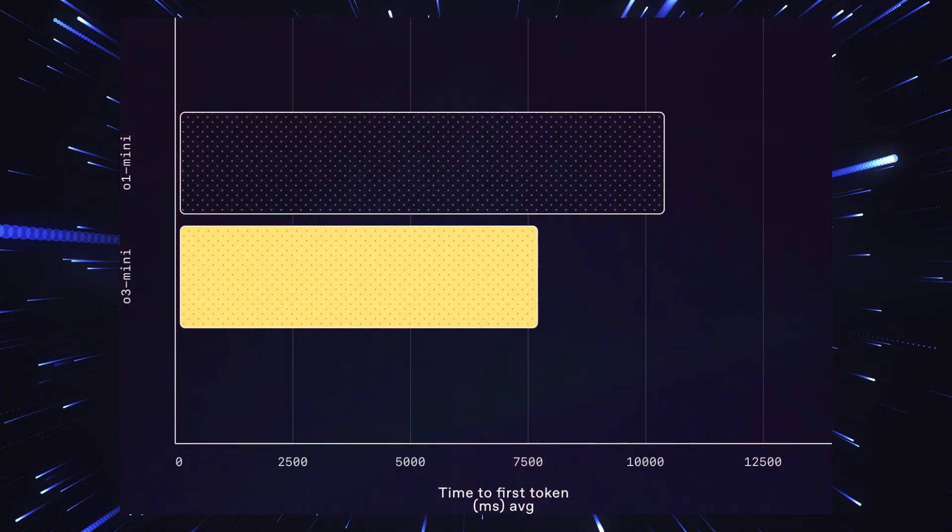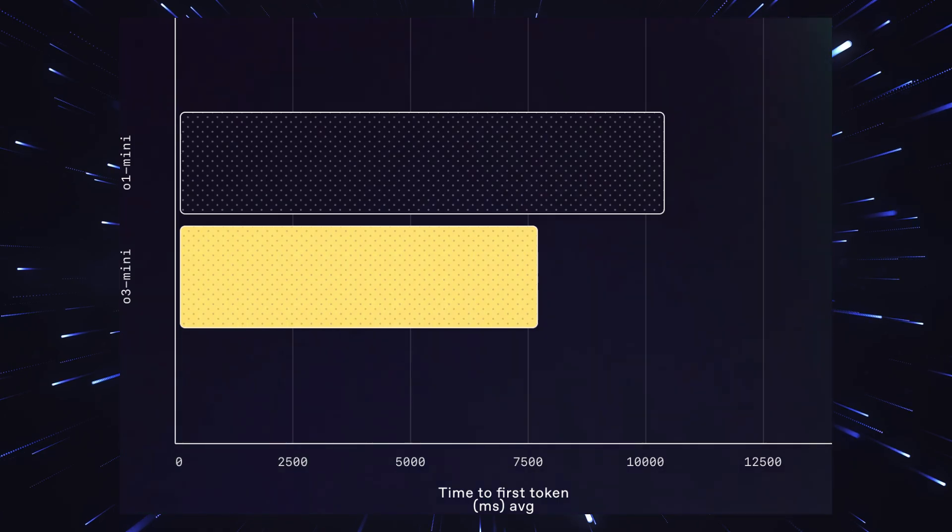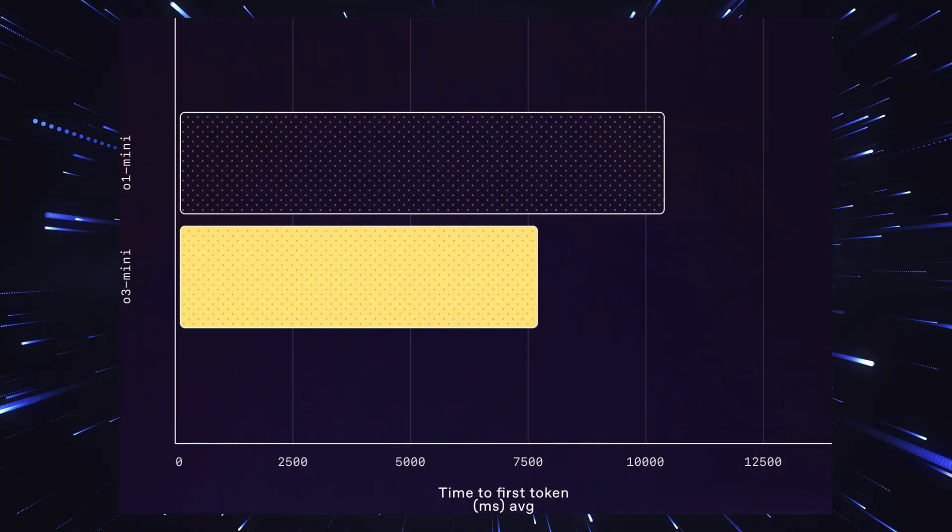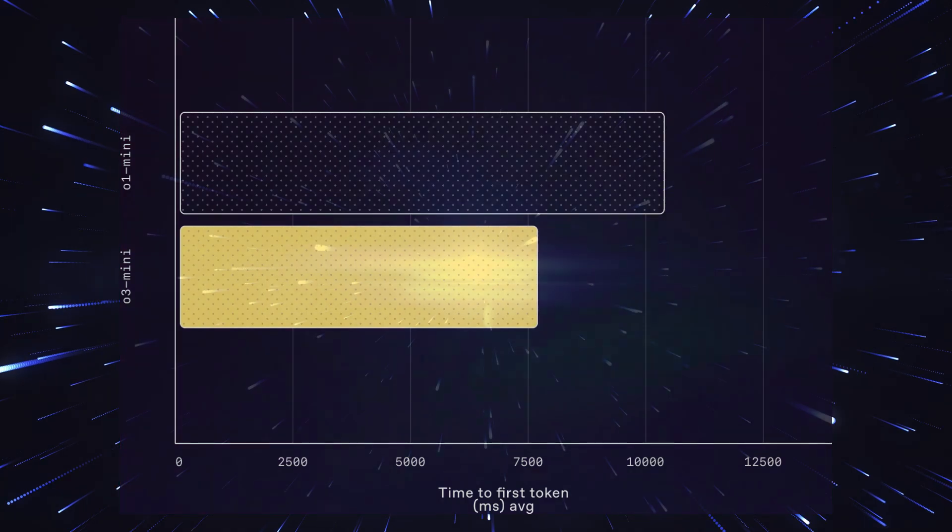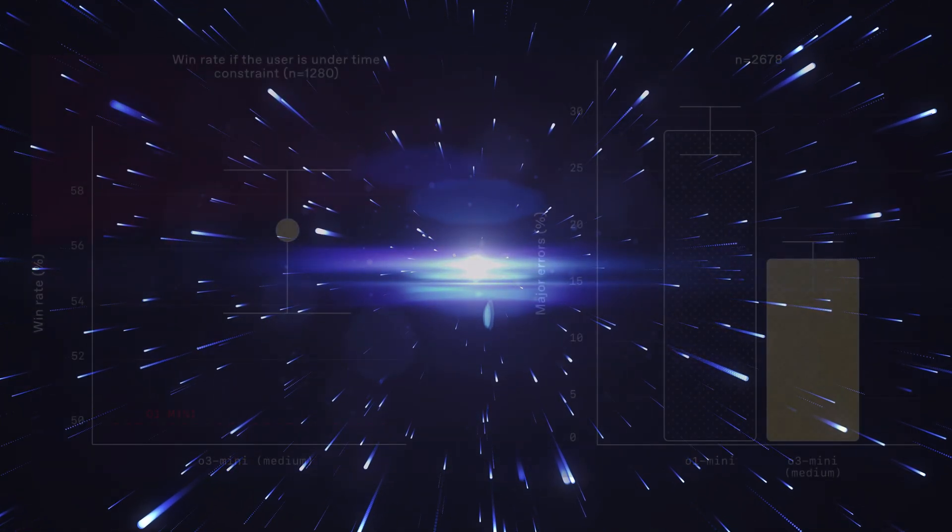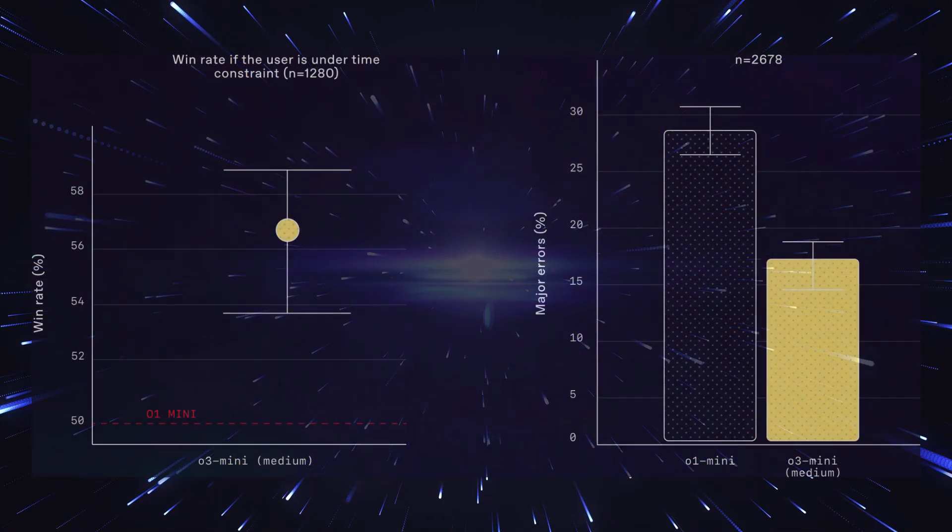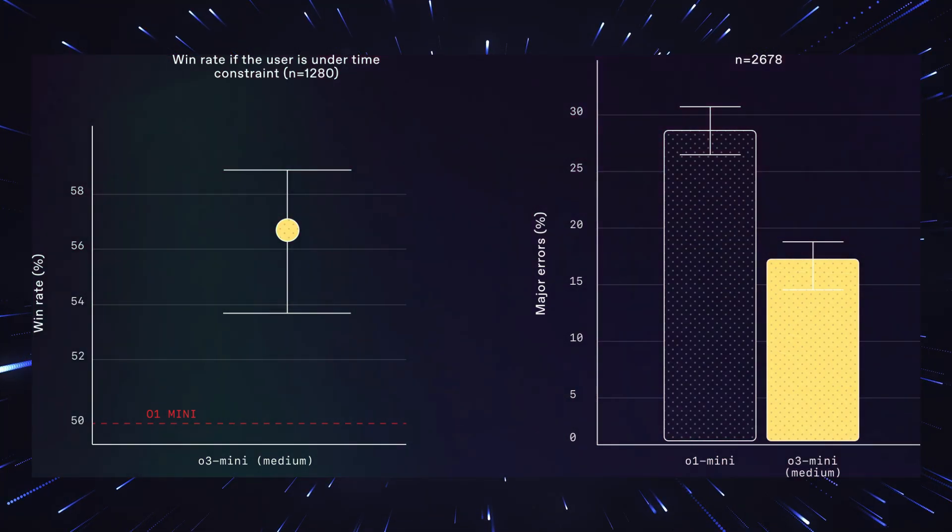But the superior performance of the new model also shows in complex mathematical problems. While O1 achieves a success rate of about 5.5% in the world's most difficult mathematical problems, O3 Mini High achieves an impressive 9.2% on the first attempt, and even 20% when allowed multiple attempts. This might not sound like much at first glance, but we're talking about tasks that represent a real challenge, even for the best human mathematicians.